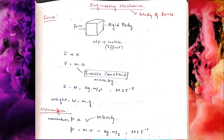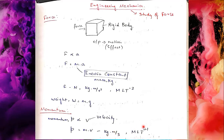Next one is momentum. Momentum is proportional to velocity. Mass is constant, so mass into velocity is momentum. The unit is kg⋅m/s, and the dimensional formula is MLT⁻¹.